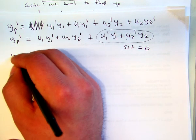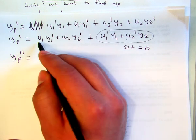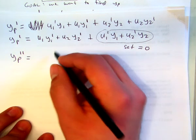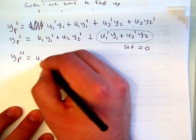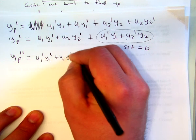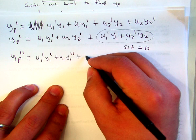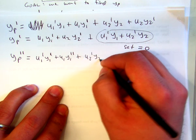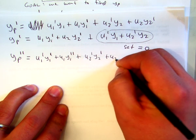So now if we do second order derivative, using product rule again, you get u1 prime y1 prime plus u1 y1 double prime plus u2 prime y2 prime plus u2 y2 double prime.